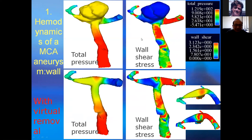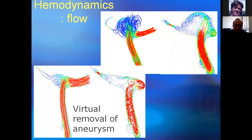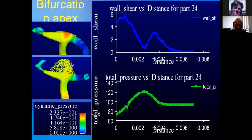This shows the blood flow coming into the aneurysm and onto the bifurcation wall. A withdrawal line is drawn across the bifurcation wall, showing the wall shear stress and total pressure profile. After the aneurysm is virtually removed, right at the bifurcation wall, the total pressure is greatest at the peak, while the shear stress is lowest. As blood flows toward both branches, the shear stress increases quickly to two peaks. We suspected the aneurysm was initiated at one or two of these peaks.